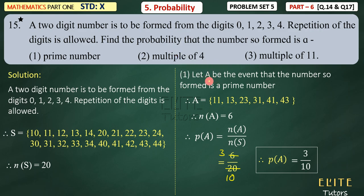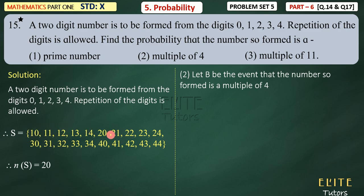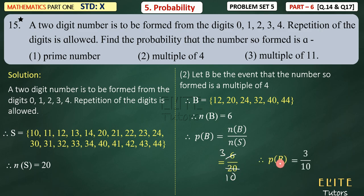Let's assume another event for multiples of 4. Let B be the event that the number so formed is a multiple of 4. Multiples of 4 from our list: 12, 20, 24, 32, 40, 44. So N(B) = 6. P(B) = N(B) / N(S) = 6/20 = 3/10.